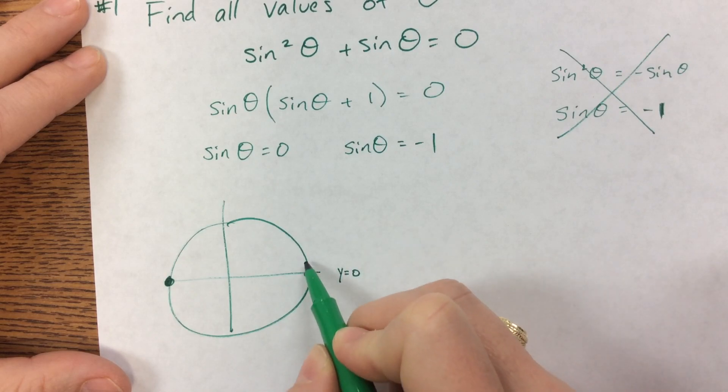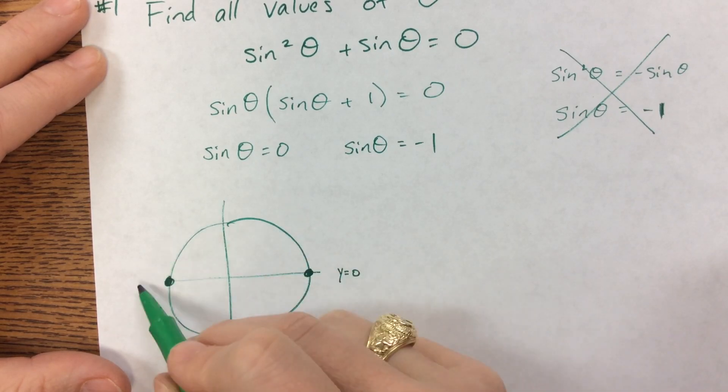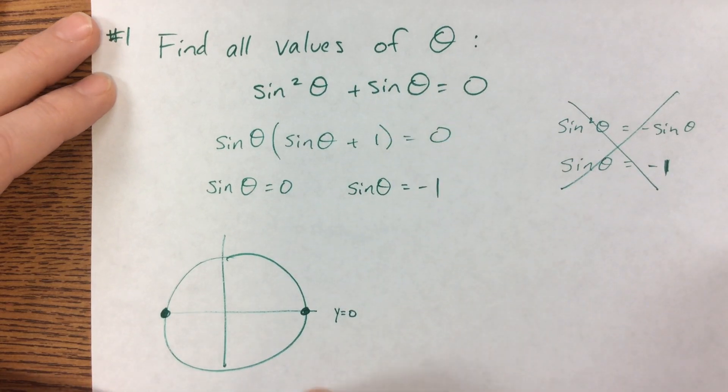And those are pi units apart. So since they say find all, the best way to answer that part is that theta is equal to pi k, because they're pi units apart, where k is an integer.